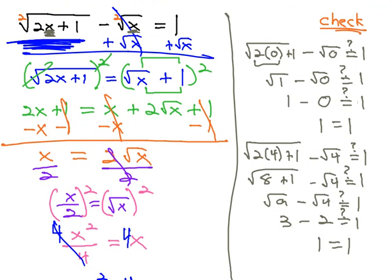Again, to solve this equation, we knew because of the even exponent, we would have to check our work. We got one radical alone and squared both sides. Get the other radical alone and square both sides.